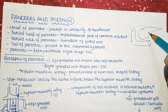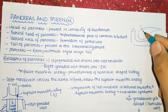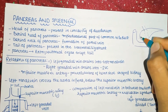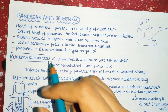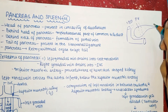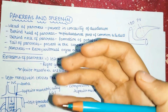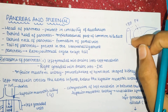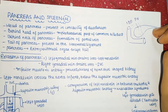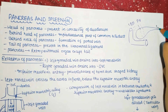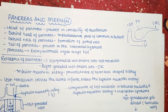Behind the neck of pancreas there is formation of the portal vein. So posteriorly you have the common bile duct and portal vein. The tail of pancreas is present in the lienorenal ligament. The pancreas is a retroperitoneal organ except the tail — the head, neck, and body are retroperitoneal, but the tail is not because it is contained in the lienorenal ligament.